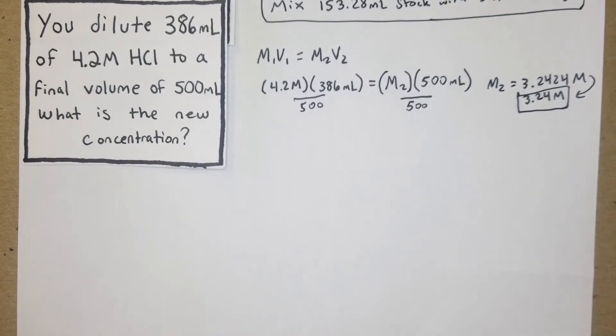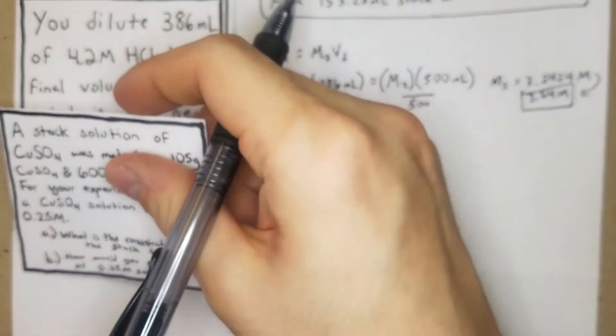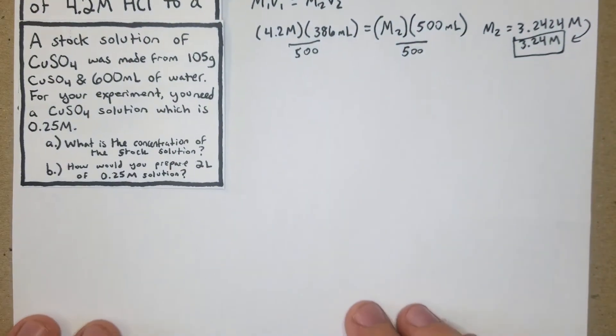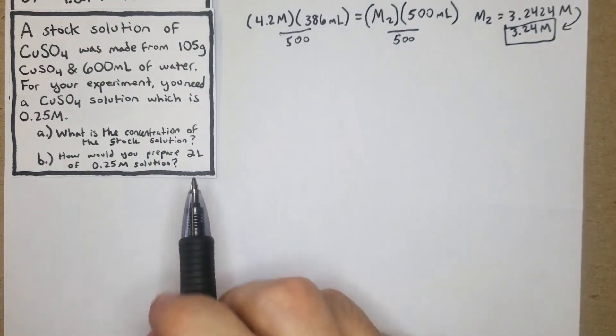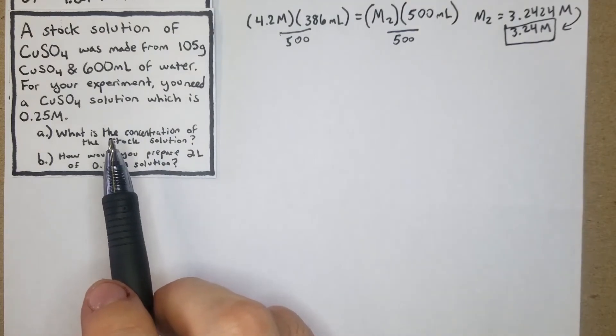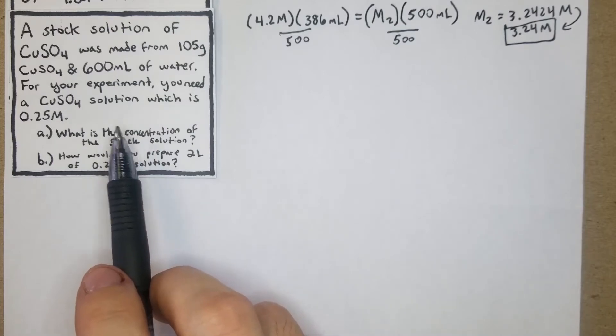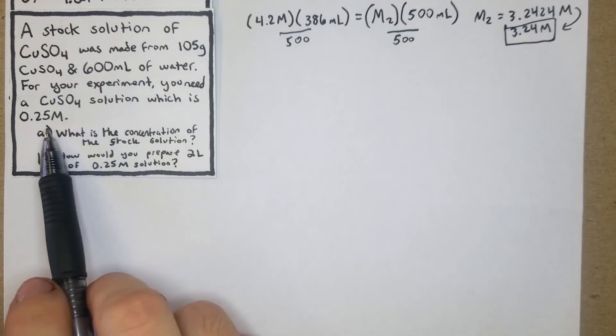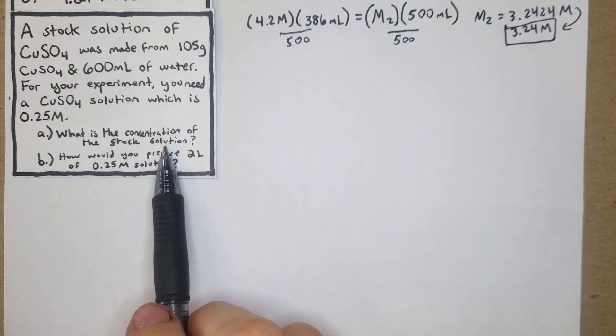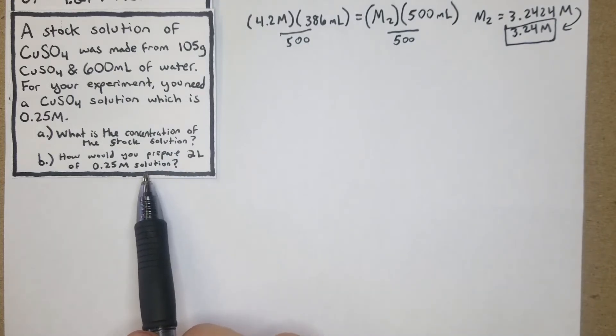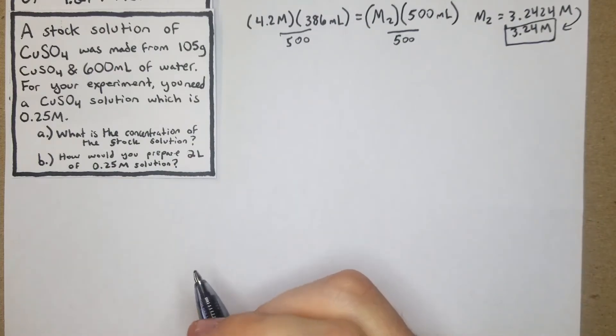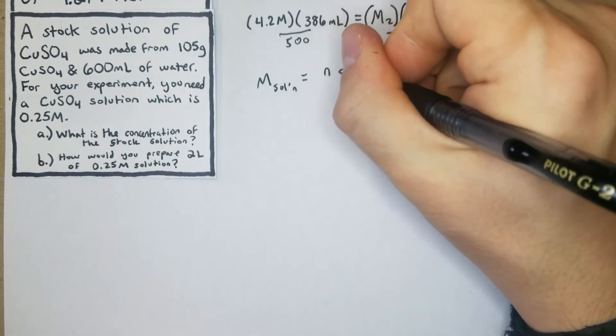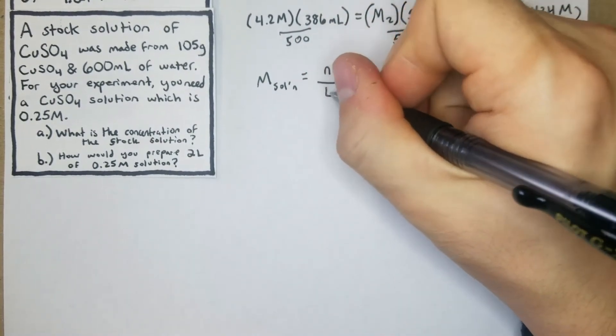So now we're going to get a little bit more complex. And these are the probably open response kind of multi-step or multi-question problems that will give certain people headaches depending on, you know, they're sometimes going to be pretty difficult. This one's not the worst one. So a stock solution of CuSO4 was made from 105 grams of CuSO4 in 600 mL of water. So right there, we know we're going to have to probably determine the molarity there. For your experiment, you need a CuSO4 solution which is 0.25 molar. This is a two-part question now. What is the concentration in the stock solution? And how would you prepare 2 liters of that solution that you need, which is 0.25 M?